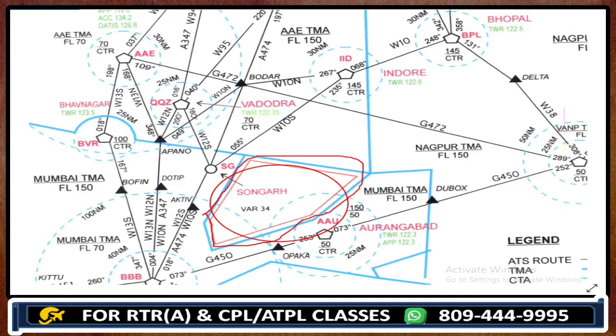So this is how we identify restricted areas, danger areas, and prohibited areas in charts. That was it for chart number one. Now let's have a look at other charts.